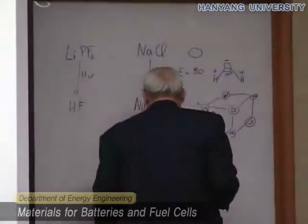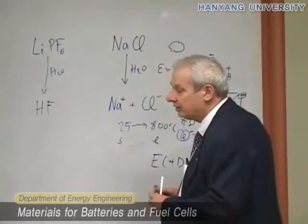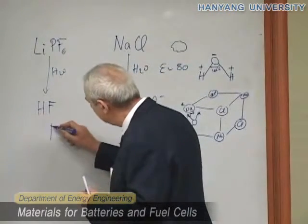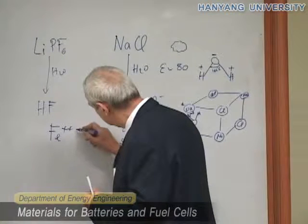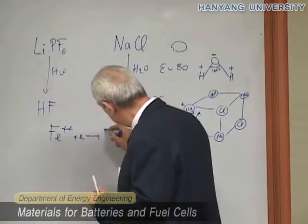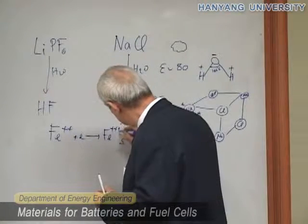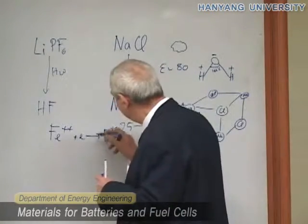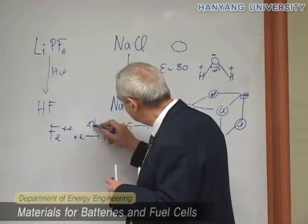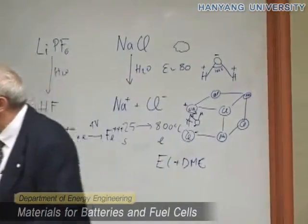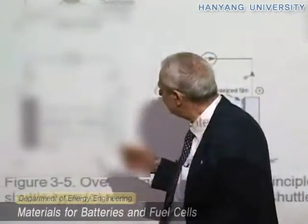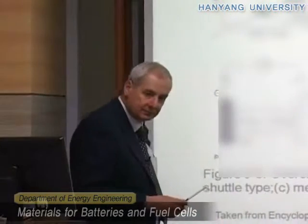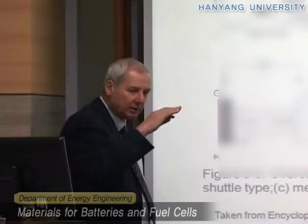B, for instance, usually is an organic compound. Let's consider that we have something like this. Suppose that this reaction happens at 4 volts. If the voltage of the cell goes to 4 volts, instead of decomposing the electrolyte, it may run this reaction that then stops the growing of the voltage.